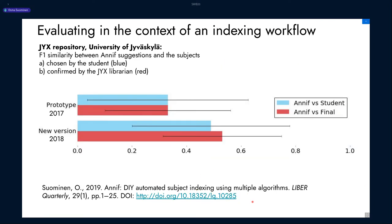Since Annif has been used in some systems for some time already, we have also been able to measure how many of the Annif-suggested subjects are selected into the final metadata by human indexers. The YICS institutional repository of the University of Jyväskylä started using the Annif prototype early on — at that time, around one third of the Annif suggestions were accepted. With the new implementation using better algorithms, this increased to one half. We plan to make more measurements like this in the future.